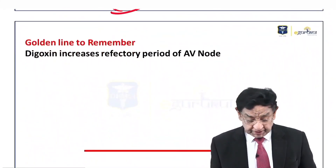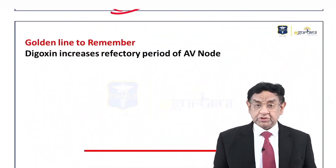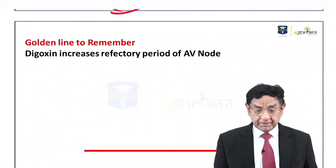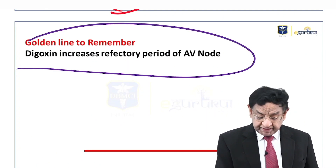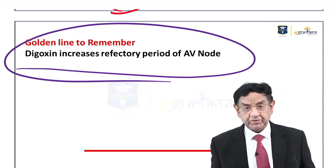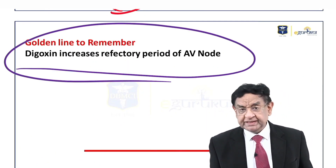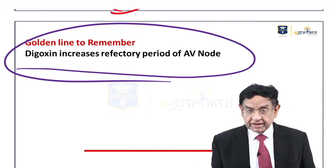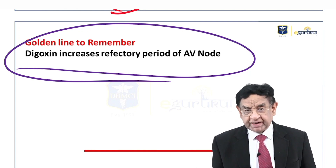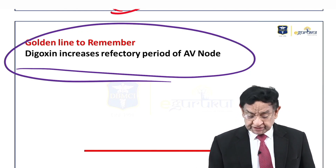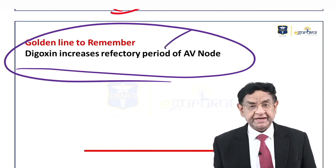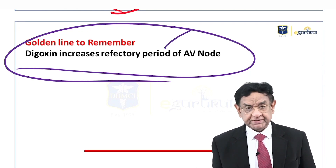The golden line to remember: digoxin increases the refractory period of the AV node and also causes increased contractility of the myocardium. That's why we use it in atrial fibrillation.